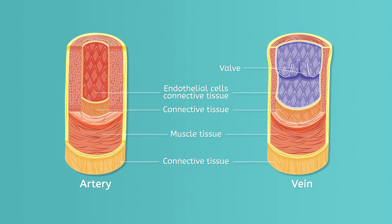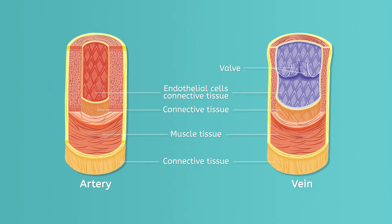Just like the heart, blood vessels are built from tissues. Blood vessels are made of a thick wall of connective tissue, followed by layers of smooth muscle tissue, a bit more connective tissue, and finally, the internal lining of the blood vessels is another type of connective tissue made of smooth endothelial cells. The small capillaries are mostly just epithelial tissue. As you can see in this image, veins contain valves built of connective tissue that prevent blood from flowing backwards on its way to the heart.